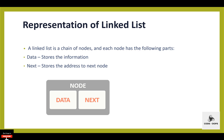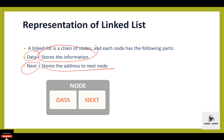Representation of linked list: a linked list is a chain of nodes and each node has the following parts — the data part and next part. In the data part, we can store the information. In the next part, we can store the address of the next node to be processed.